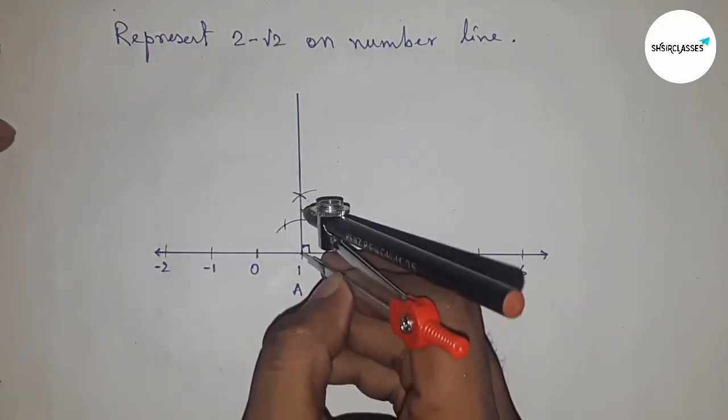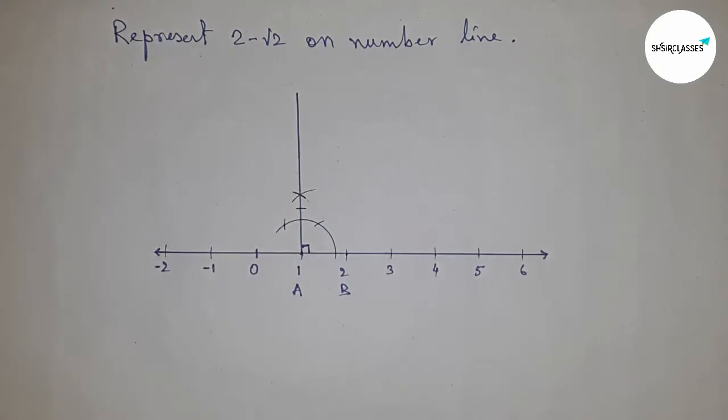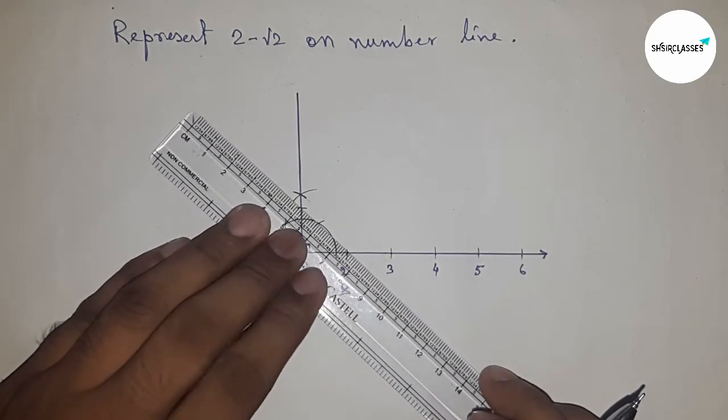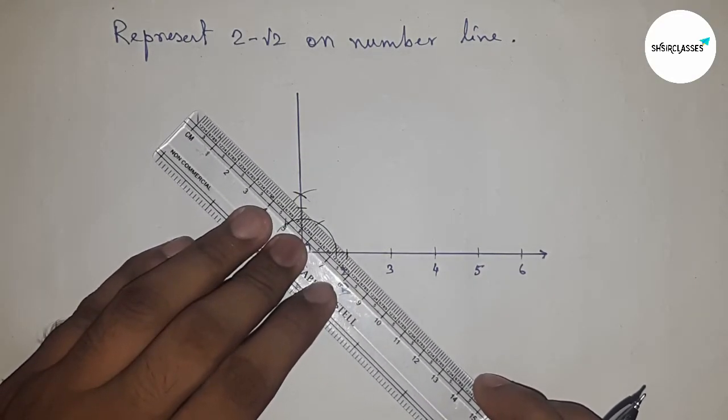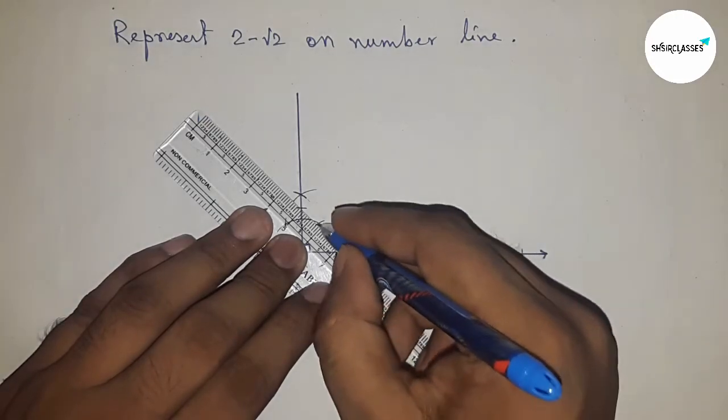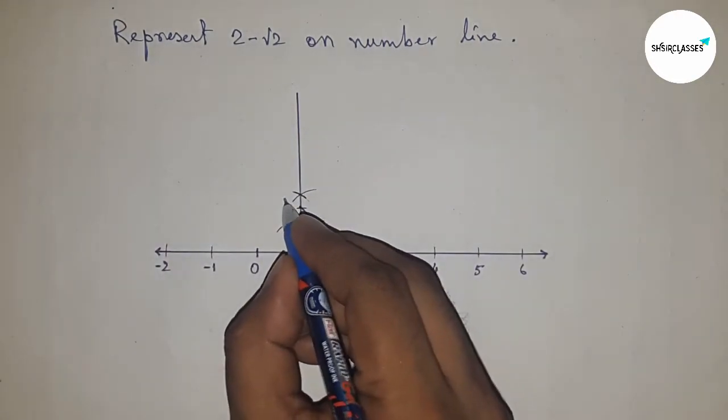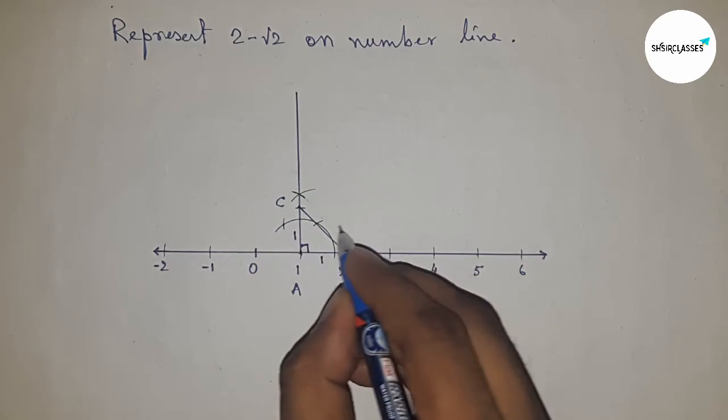Put the compass here and cut the line this way. Next, joining the two points to get the hypotenuse. So this is point C, and this is one unit, this is one unit.